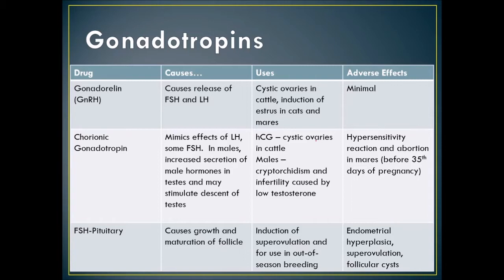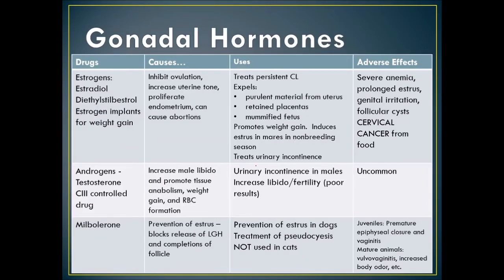FSH can also be used for out-of-season breeding, such as in a mare during the dark days of winter. Side effects to watch for include endometrial hyperplasia, superovulation, and follicular cysts. Gonadal hormones — estrogens including estradiol and diethylstilbestrol — are used as estrogen implants for weight gain in growing animals. They inhibit ovulation, increase uterine tone, proliferate the endometrium, and can cause abortions.